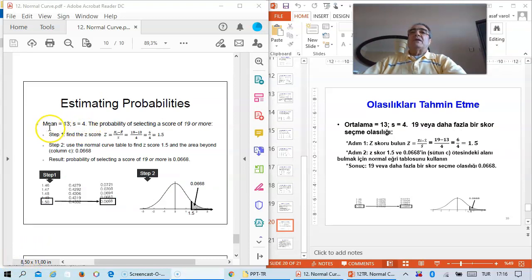Example: Mean equals 13, standard deviation S equals 4. What is the probability of selecting a score of 19 or more? Step 1: Find the z-score. Z equals X minus X-bar divided by S. 19 minus 13 divided by 4 equals 1.5. Step 2: Use the normal curve table to find z equals 1.5 and the area beyond using column C, which gives 0.0668. Result: The probability of selecting a score of 19 or more is 0.0668.